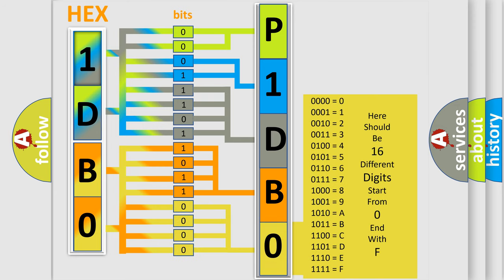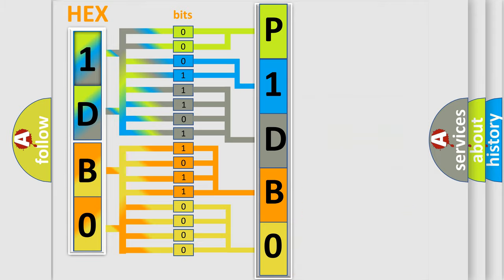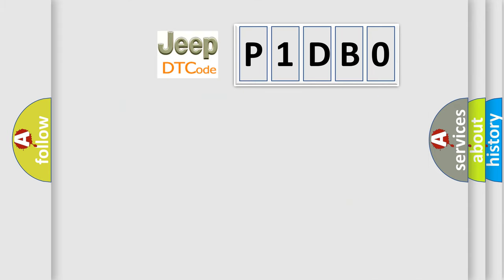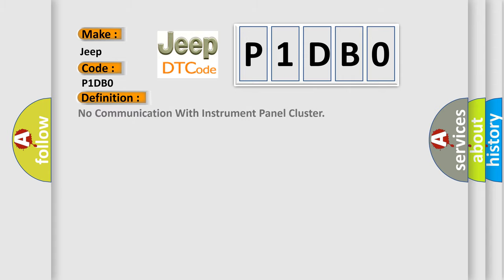We now know in what way the diagnostic tool translates the received information into a more comprehensible format. The number itself does not make sense to us if we cannot assign information about what it actually expresses. So, what does the diagnostic trouble code P1DB0 interpret specifically for Jeep car manufacturers? The basic definition is: No communication with instrument panel cluster.